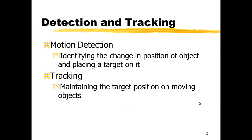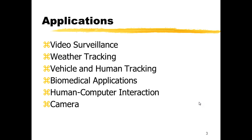Motion detection is basically identifying objects in a video that have a relative displacement or a change in position. Once such objects are identified, the tracking of these objects is performed by placing a target on them and maintaining the position of the target according to the movement of the object. The applications of motion detection and tracking are in many fields.